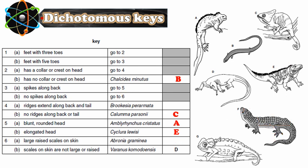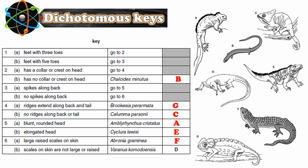The last one: how many toes does it have? Three. Feet with three toes — go to two. Has a collar or crest on head? Yes, it does have a crest on its head. Go to question four: ridges extended along the back? Yes, these are ridges extended along the back. So the name of this animal is Brookesia pyramidata. We write G here.